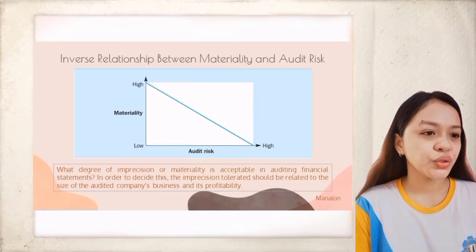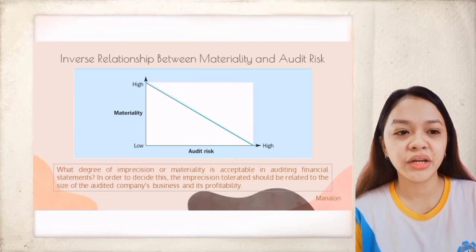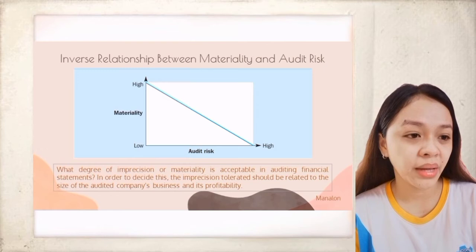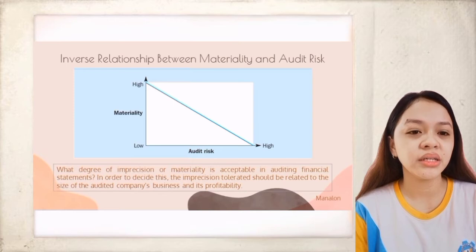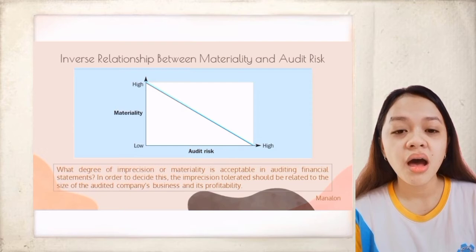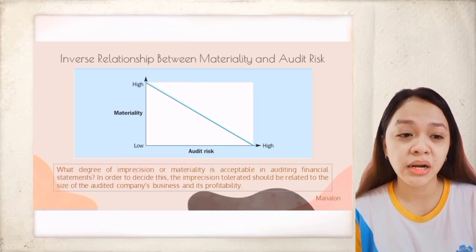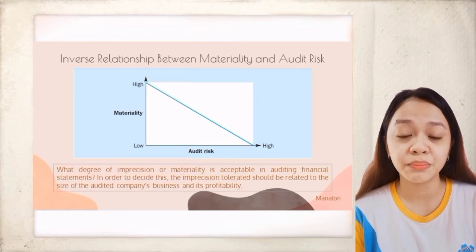The question is: up to what level of imprecision or materiality is acceptable when auditing financial statements? In order to decide this, the imprecision tolerated should be related to the size of the audited company's business and its profitability. For example, a $5,000 difference may not be material for large companies but could be material for smaller ones.